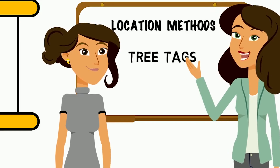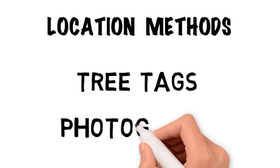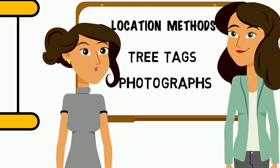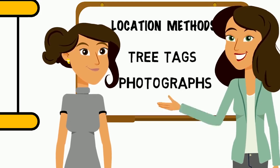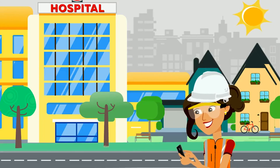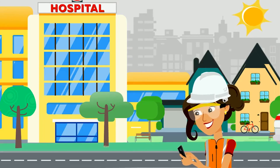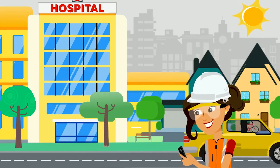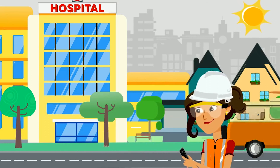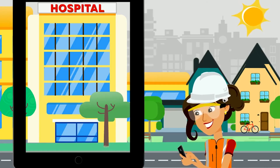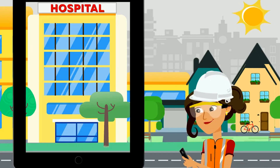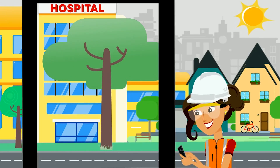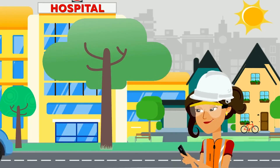The last location method is taking a photo of the tree. How is that a location method? Well, in cities, trees along sidewalks, in lawns, and in landscape parks are usually near buildings or other built structures. So when you take a photo of a tree with a building in the background, that becomes a record that future field crews can use to make sure that they are standing in the right place.